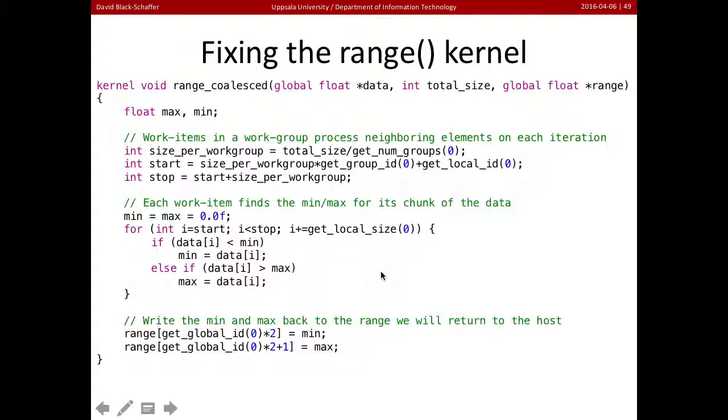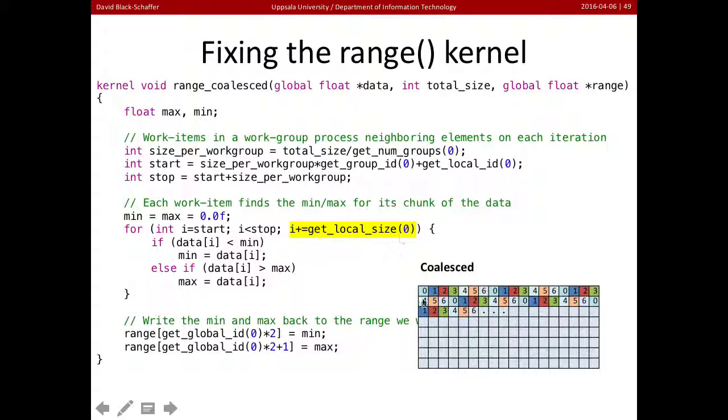So here's our range kernel that's been fixed to be coalesced. And what you see is the major change is that instead of iterating through one value, so going along in an order, we're now jumping around. So now our coalesced access pattern we're taking the first value and then we're going to jump over all the other threads to the next one, which means that each thread is now getting values next to each other.